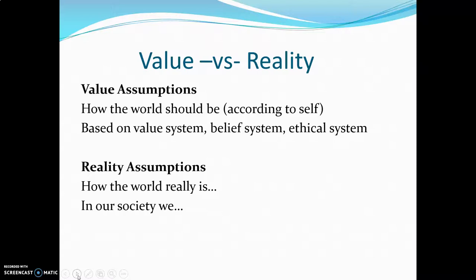That brings us to value versus reality assumptions. With value assumptions, which we worked on in chapter 2, a value assumption is based on how the world should be — how do I think this world should be? It's based on their value systems, based on their ethical systems. Reality assumptions are different. Reality assumptions are based on reality — it's how the world really is. I use the phrase 'in our society, we...' to help me find the reality assumptions. I actually find it easier to find the reality assumption first, and then I can find the value assumption, because the reality assumptions are how the world is.